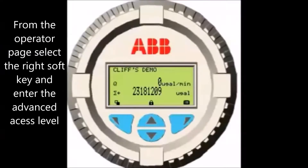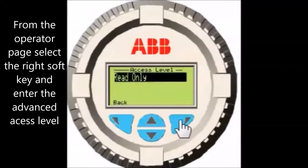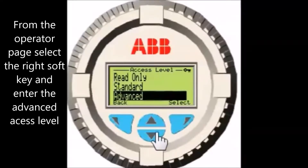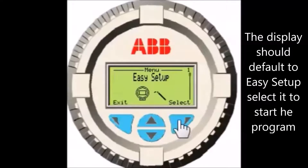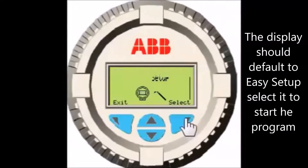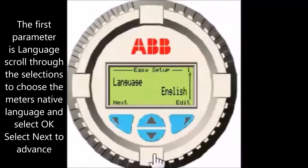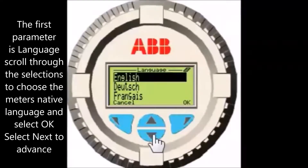The operator page should have a lock icon at the bottom center of the screen. Select the right soft key and scroll down to the advanced level of access and select it. The display will default to the easy setup program, menu 1 — select it.